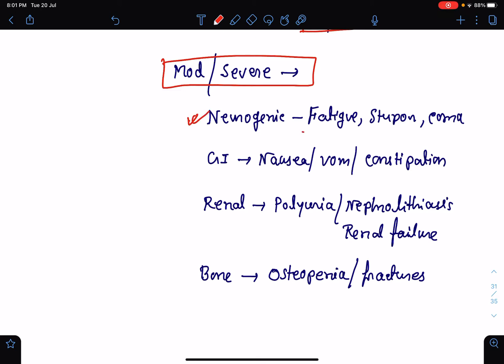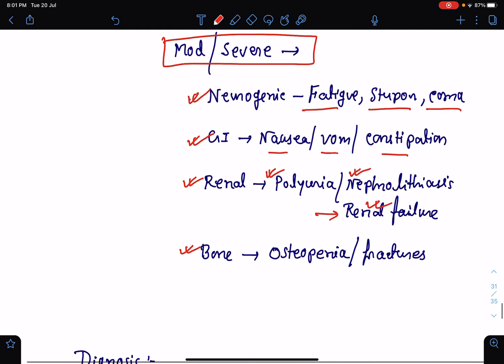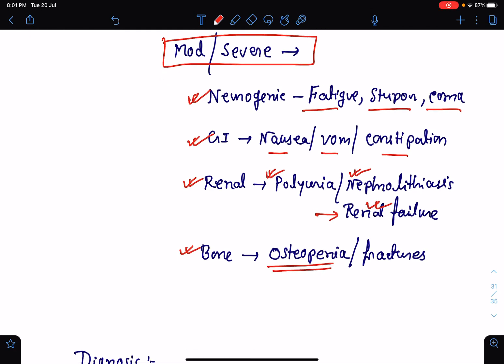Neurogenic symptoms can be fatigue. It may range from fatigue to stupor, depression, personality changes up to coma also. In the GIT, it may cause nausea, vomiting or constipation. In the kidney or renal symptoms, it may result in polyuria, nephrolithiasis. Severe cases of hypercalcemia will result in nephrocalcinosis, ultimately leading to renal failure. In the bone, due to bony resorption, it will result in osteopenia and the patient may have repeated fractures, even with trivial traumas.